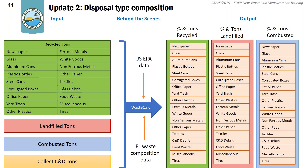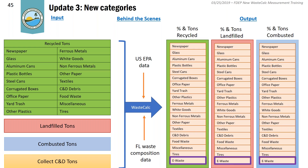In future versions, you'll be able to quickly see the tons of newspaper that was landfilled or the tons of food waste that went into a waste-to-energy facility. These data are essentially already calculated as part of the background and will be presented as output. One idea is adding new categories, for example electronics or e-waste, or other categories that aren't currently reflected but are appearing in waste composition studies.